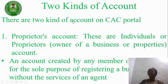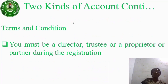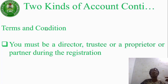You can create an account as a proprietor who wants to register your business in CAC portal, or you can create an account as an agent. The proprietor account is a personal account you create to register your own business — not someone else's business. There are terms and conditions: if you are creating an account as a third party to somebody, you must be a director, trustee, proprietor, or partner during the registration process.